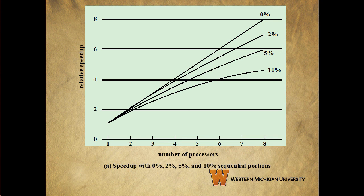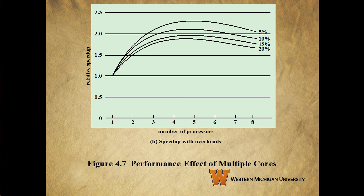If we take a look at the 10% line at the bottom, we see that with just 10% of inherently serial code, our eight-processor system yields a performance gain of only 4.7. This second graph shows our speedup with those overheads taken into account. So if we account for inter-process and inter-thread communication and cache coherence overhead, we see that our improvement gets a whole lot worse than if we assume infinite parallelizability.